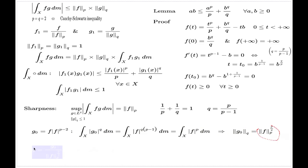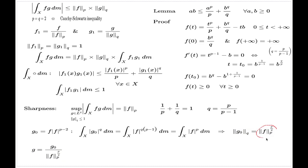The left-hand side here is the LQ norm to the power q, and the right-hand side is the LP norm to the power p. Now, the representative where the supremum is attained is g0 divided by the LQ norm of g0. For such g, we have the LQ norm equal to 1, so this g is indeed in the unit ball.